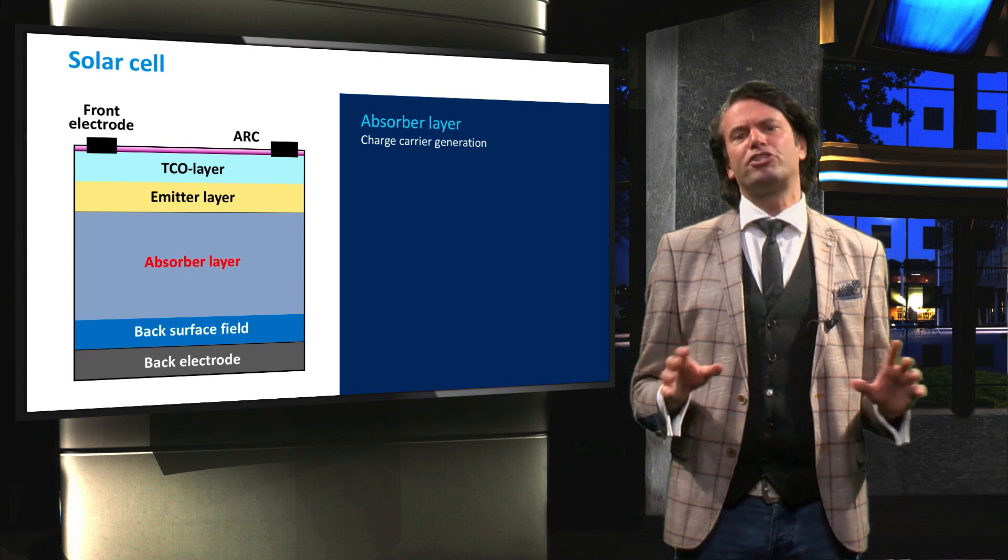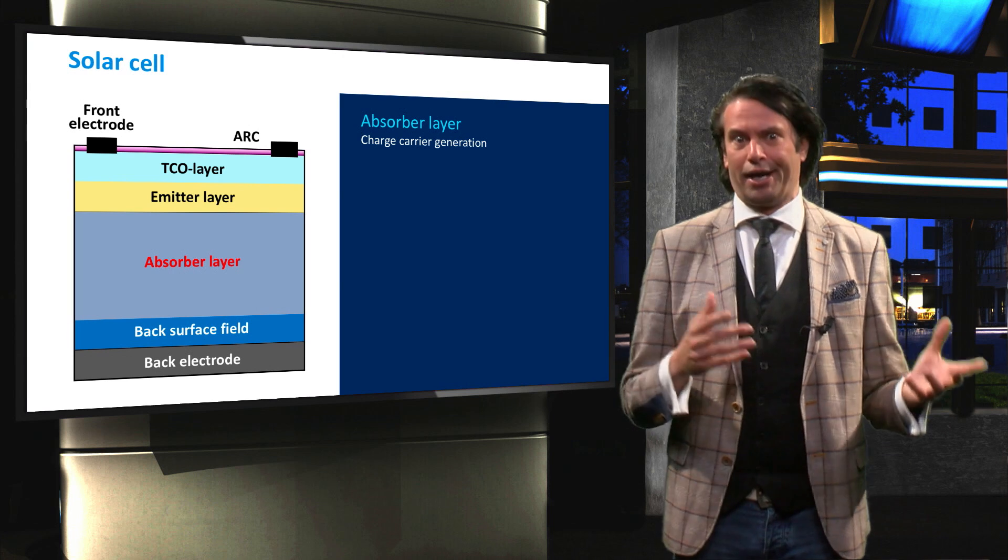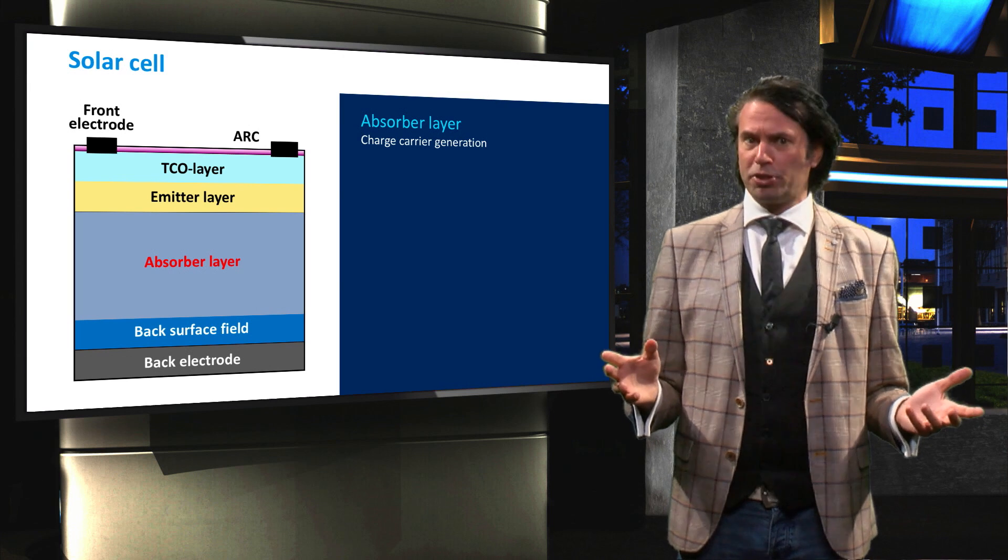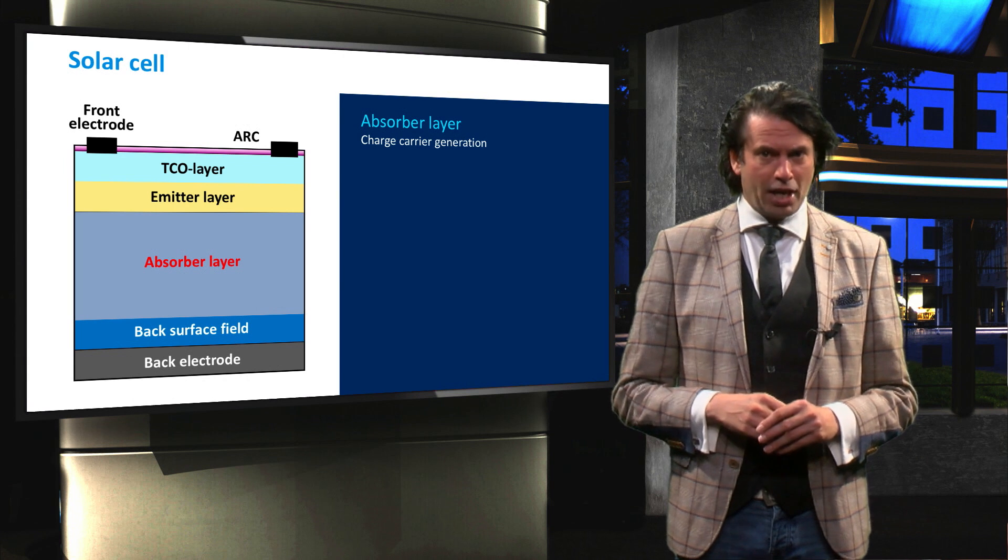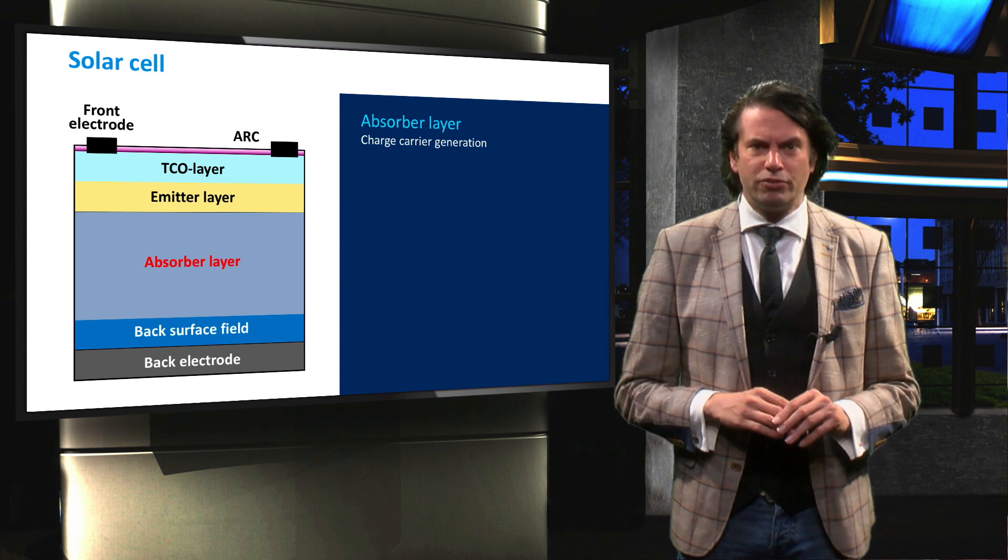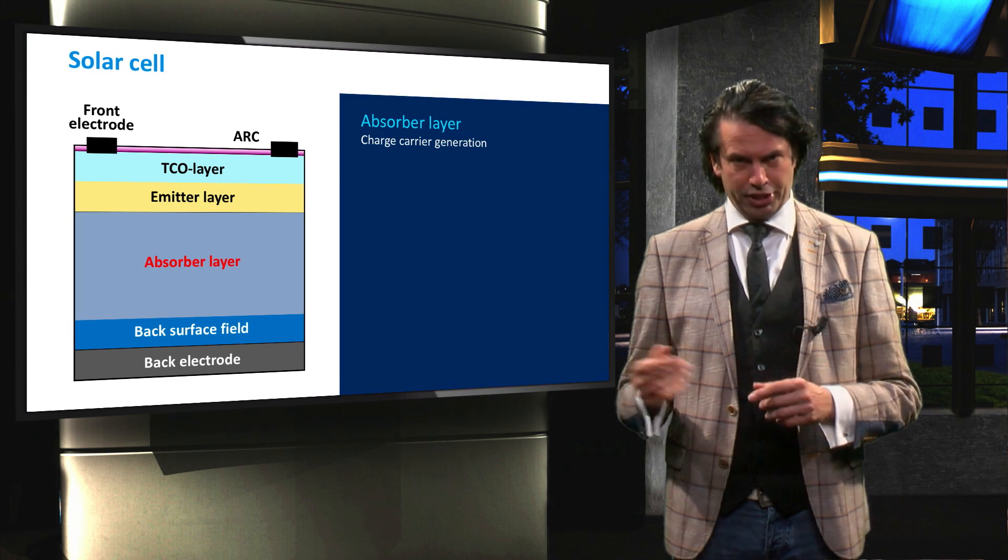The purpose of this absorber layer, as its name implies, is to absorb light. Through this absorption, minority and majority charge carriers are formed. In the case of a P-type absorber, electrons are the minority carriers and holes are the majority carriers.